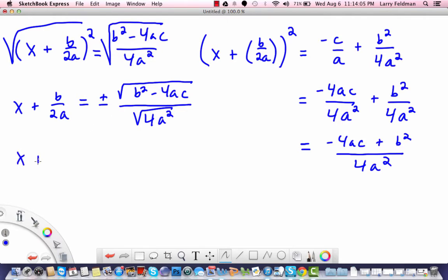So continuing on, we have x plus b over 2a equals plus or minus square root b squared minus 4ac all over—now what is the square root of 4a squared? Well, it's simply 2a by taking the square root of each piece. Square root of 4 is 2, square root of a squared is a.